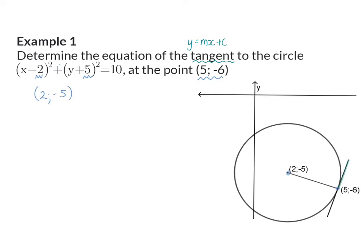We need to calculate the equation of the tangent and therefore we need to calculate its gradient m and its y-intercept c. But on this tangent we only have one coordinate, so we'll start off focusing on our radius where we have two coordinates.